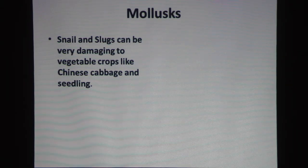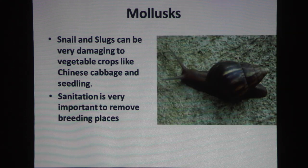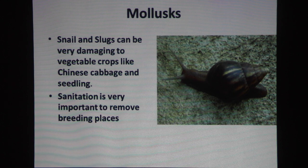Mollusks: snails can be very damaging to vegetables, cabbages, and seedlings. Sanitation is very important to remove breeding places. Snails like to stay under cover — under roots, in compost areas, under weeds — so if you keep your place clean with good sanitation, you will have fewer problems. If you see snails, you can hand-pick them and step on them or use a shovel to destroy them.